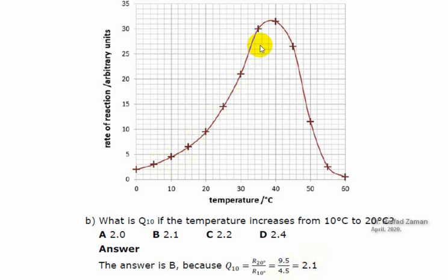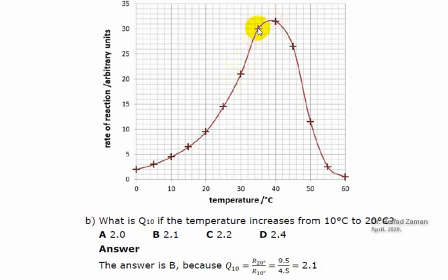Notice one thing: this reaction and the previous reaction were the same. However, the temperature coefficient in each case was different — between 10 to 20 degrees, the temperature coefficient was 2.1, and between 20 to 30 degrees, the temperature coefficient increased. We can notice this by the steepness of the graph — the graph is much steeper there, so the temperature coefficient is much more. However, between higher temperatures the gradient of the graph is not as steep, meaning the temperature coefficient starts to decrease, or more exactly, it is increasing at a decreasing rate. And as we increase the temperature beyond the optimum temperature, the temperature coefficient is actually decreasing.